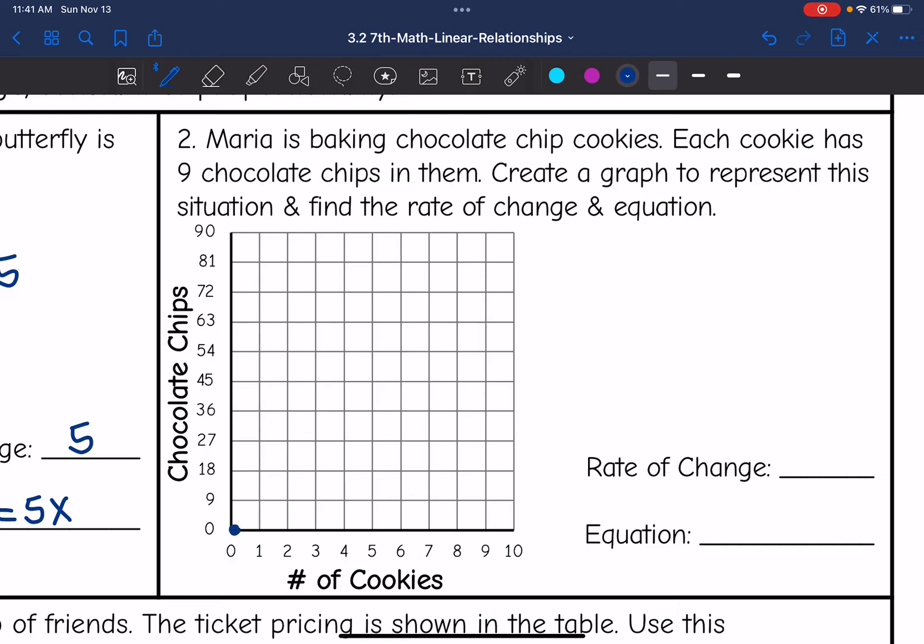If she has baked one cookie, then she has used nine. Two, she's used 18. Three, 27, four, 36, and so on. There is a graph to represent this proportional situation with the number of cookies and number of chocolate chips.